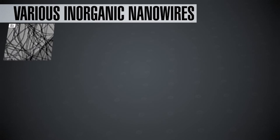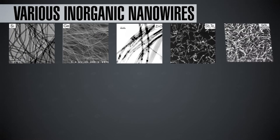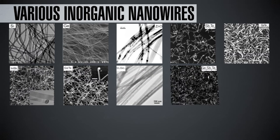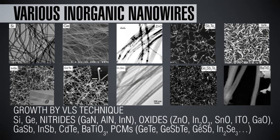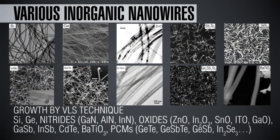These are images of some of the inorganic nanowires. For example, silicon and germanium, a variety of nitrides like gallium nitride, aluminum nitride, indium nitride, and a whole variety of oxides such as indium oxide, tin oxide, and other materials like II-VI materials such as gallium antimonide, indium antimonide, and cadmium telluride, and then phase change materials like germanium telluride and germanium antimonide. All these nanowires have been grown by a number of groups across the world. As you can see from these scanning electron microscope images, they are very long and kind of curvy, so they look like a mat of nanowires. The diameters could be anywhere from 5 nanometers to 50, 60, even 100 nanometers. The length actually depends on the growth time; it could be several microns long.